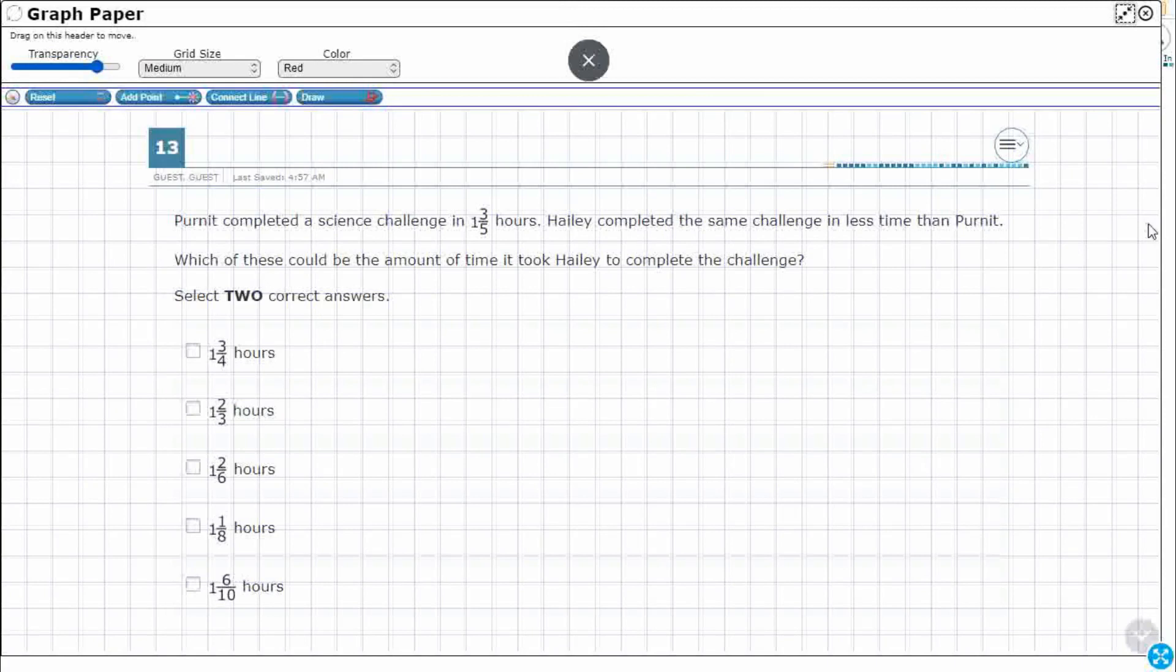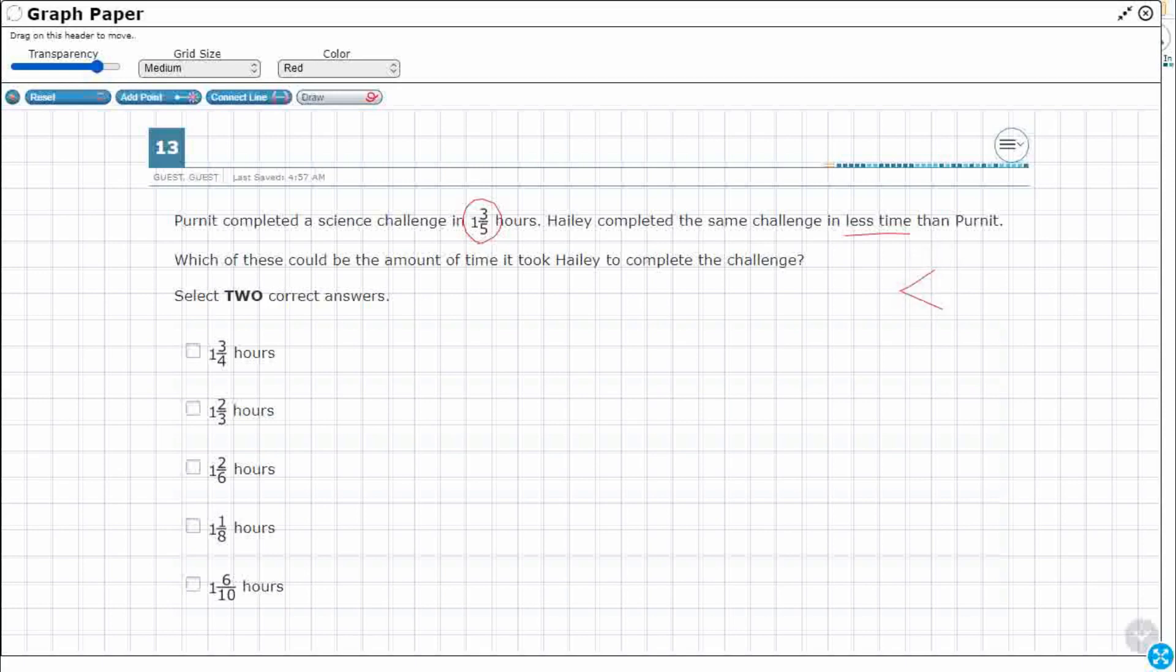So we've got Pernit completed a science challenge in 1 and 3/5 hours. Haley completed the same challenge in less time. So which of these could be the amount of time it took for Haley to complete? All right so we need something less than 1 and 3/5 hours. That's our mystery fraction. Okay so let's see what we can do here. You know what, even though it is a mixed number look everything's got a one in front of it so let's just deal with the fraction part of it. Let's just deal with the 3/5 because everything is one and something.